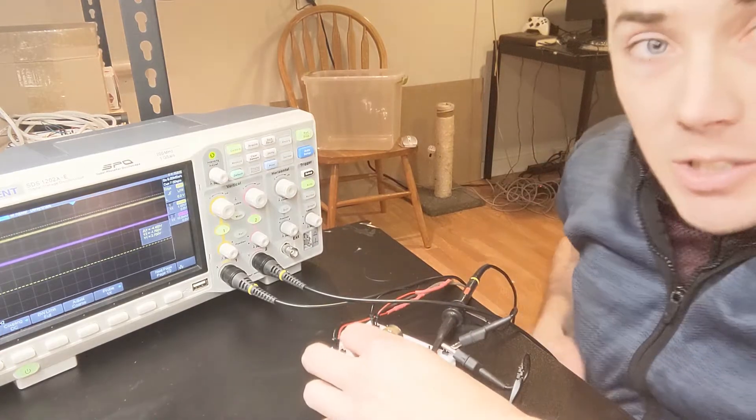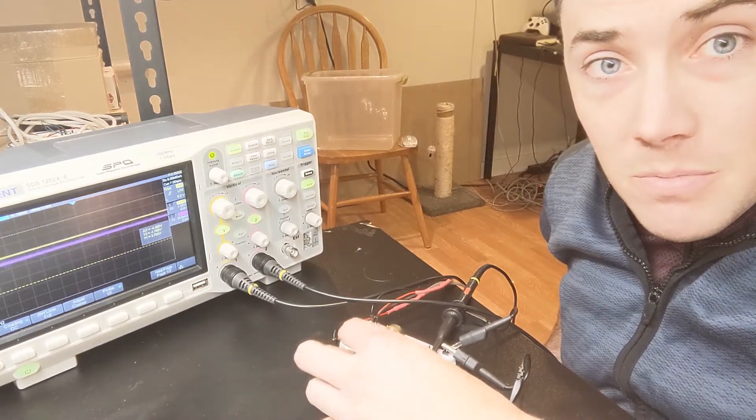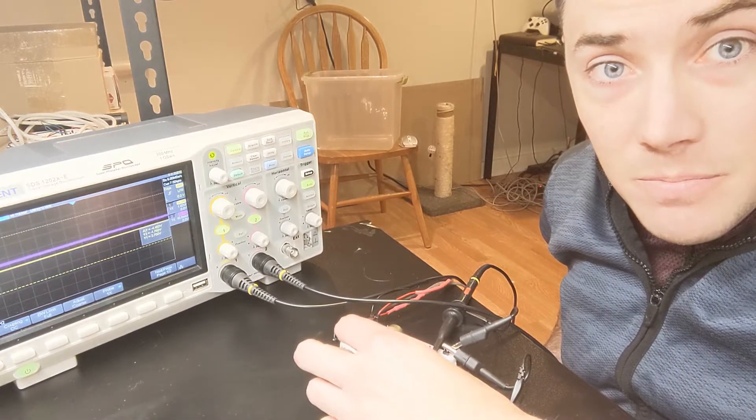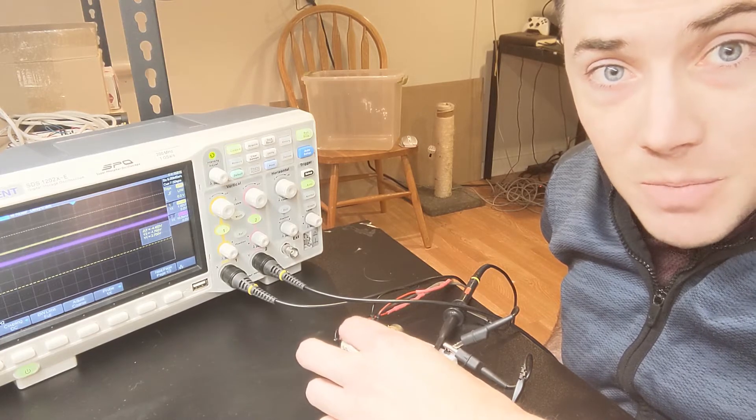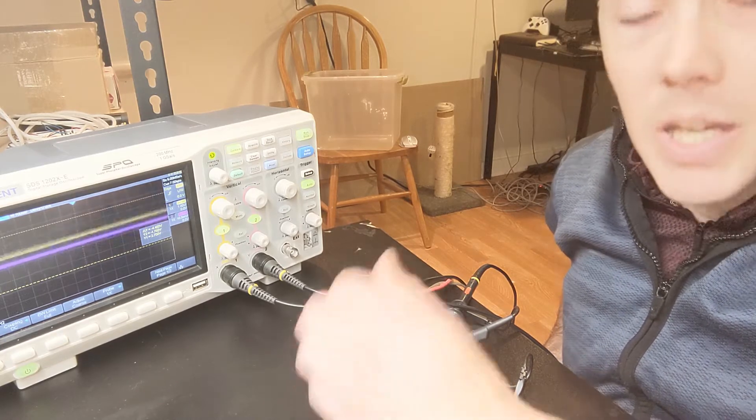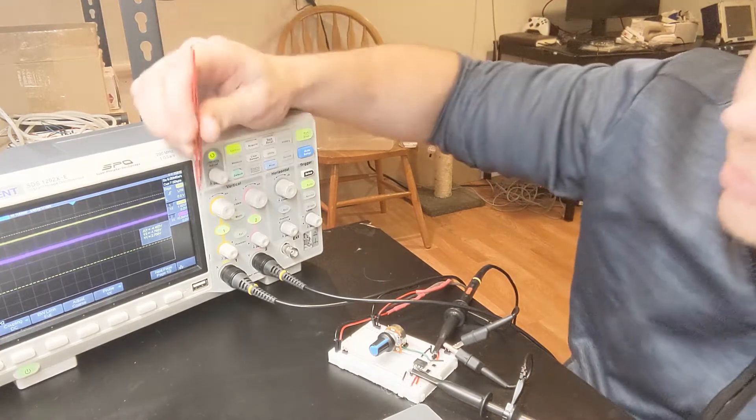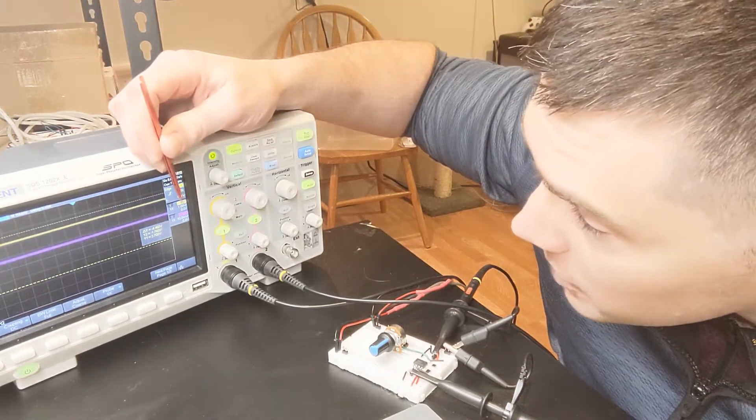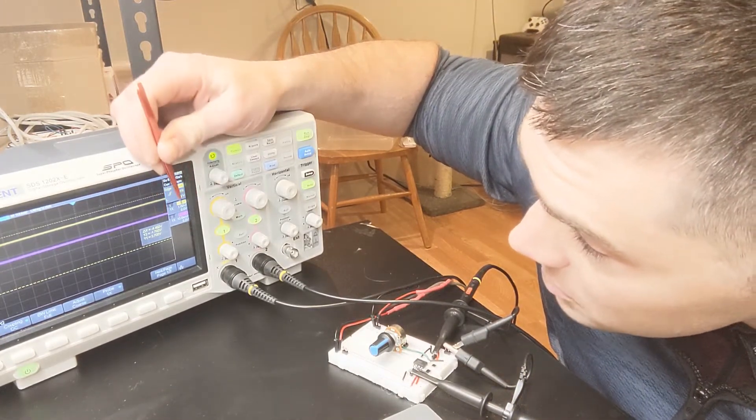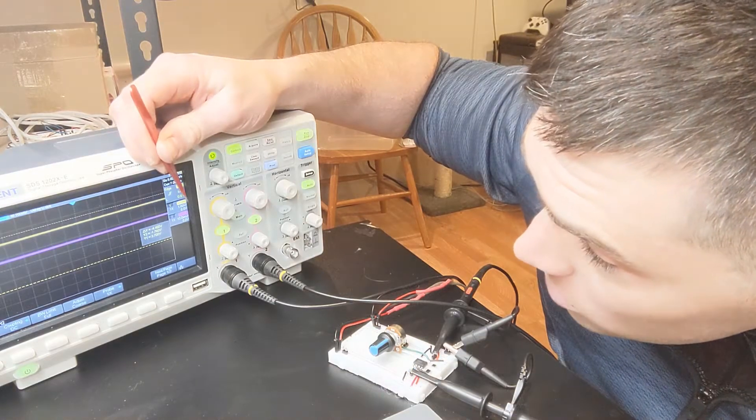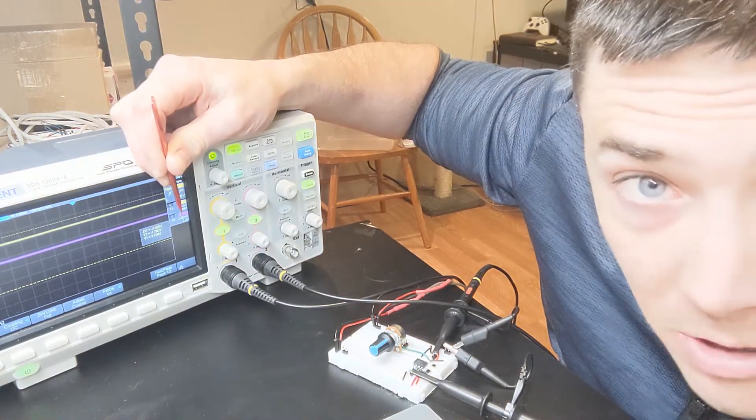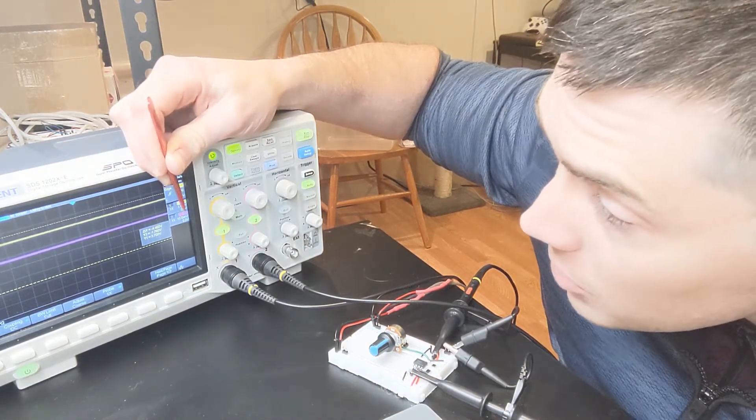So as you can see, when I turn this knob, channel 1 goes down. Channel 2 stays fixed. And I don't know if you can see over here, but channel 1, the vertical scale bar is 1 volt. Channel 2, the vertical scale bar is 10 millivolts.